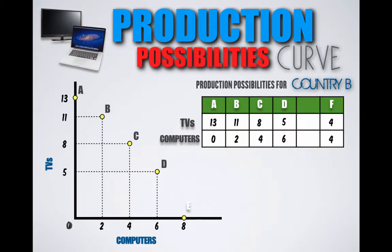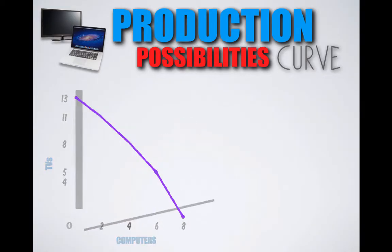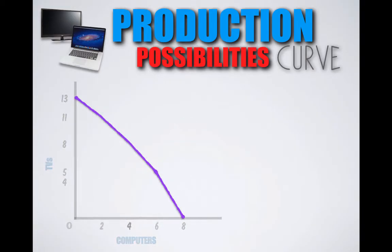And at Combination F, Country B produces four TVs and four computers. With every possible production possibility combination plotted on this graph, we can now connect these production possibility points and create a production possibilities curve. This purple line represents the production possibilities curve for Country B.